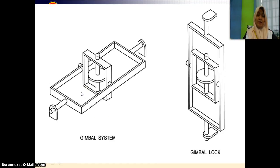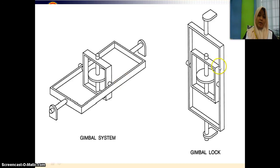This is an unwanted condition that normally occurs in the gyro. This is the rotor, inner gimbal, and outer gimbal, which must have the ability to work independently of each other. But there is a condition where the inner and outer gimbal become locked or aligned — this is what we call gimbal lock. This occurs especially when the aircraft is experiencing severe rolling or pitching.